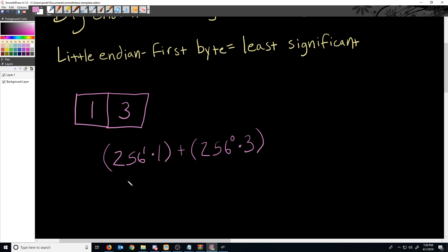We go to simplify this. We get 256 times one plus one times three. We get 256 plus three, and the result is 259.